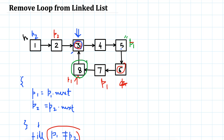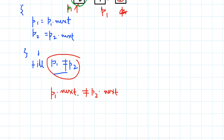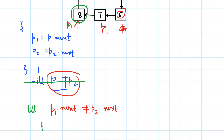When we terminate, p1 and p2 are one unit distance away from the first node of the loop. We know p1 was the pointer going through the loop, so p1.next is the first node — meaning p1 is now pointing to the last node of the loop. Once this loop terminates, we loop through until p1.next is not equal to p2.next.